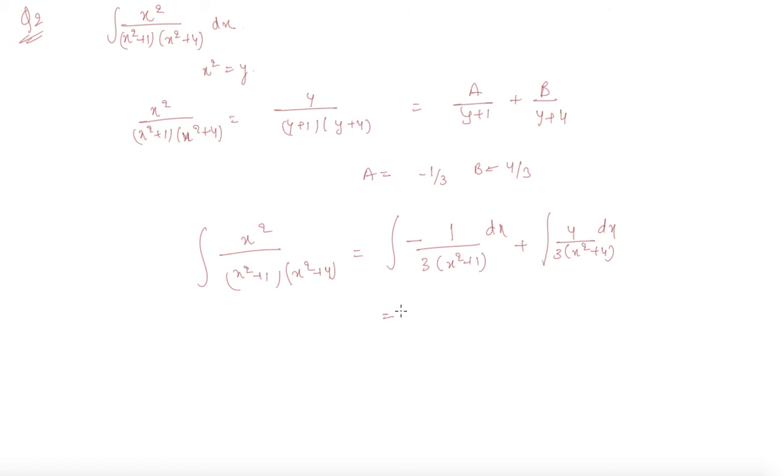So now can I write this as tan inverse x plus 4 by 3 tan inverse, or into 1 by 2 tan inverse x by 2 plus c. So my answer becomes minus 1 by 3 tan inverse x plus 2 by 3 tan inverse x by 2 plus c, some constant of integration.